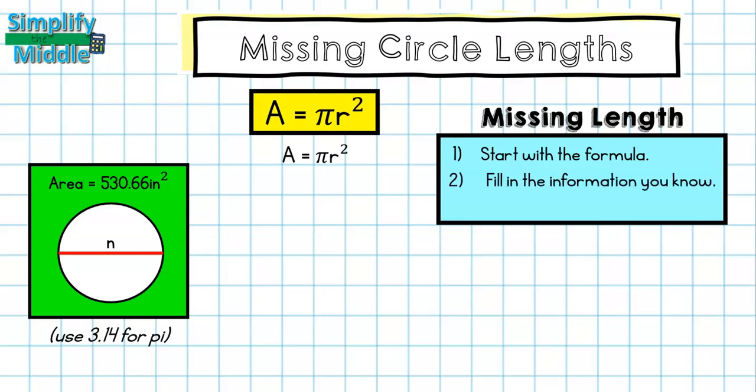My second step is to fill in my information. So I'm going to substitute in 530.66 for the area and then 3.14 for pi. And then my third step, just like before, I'm going to divide both sides by pi.